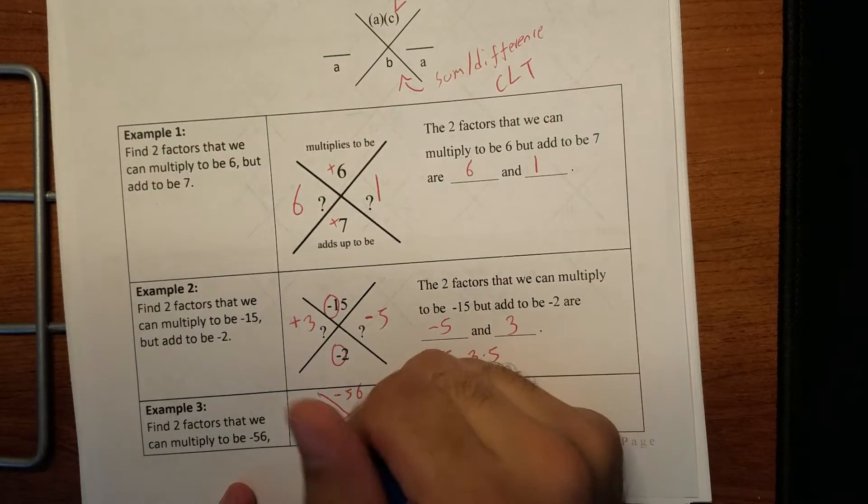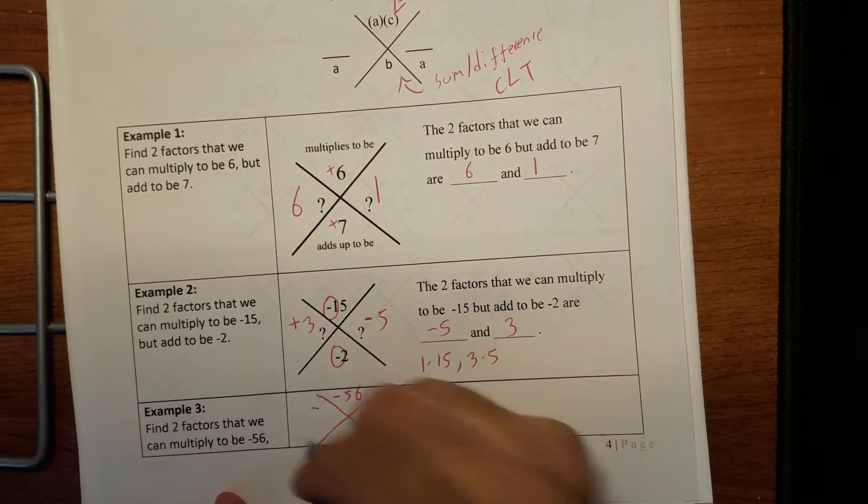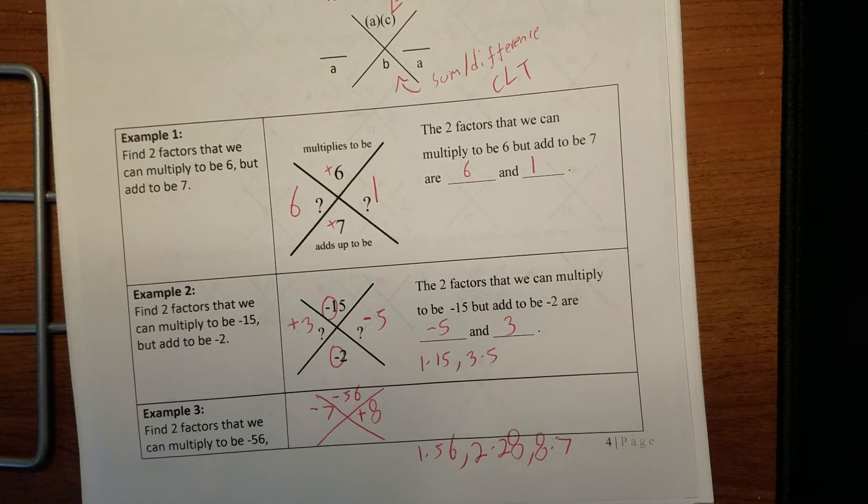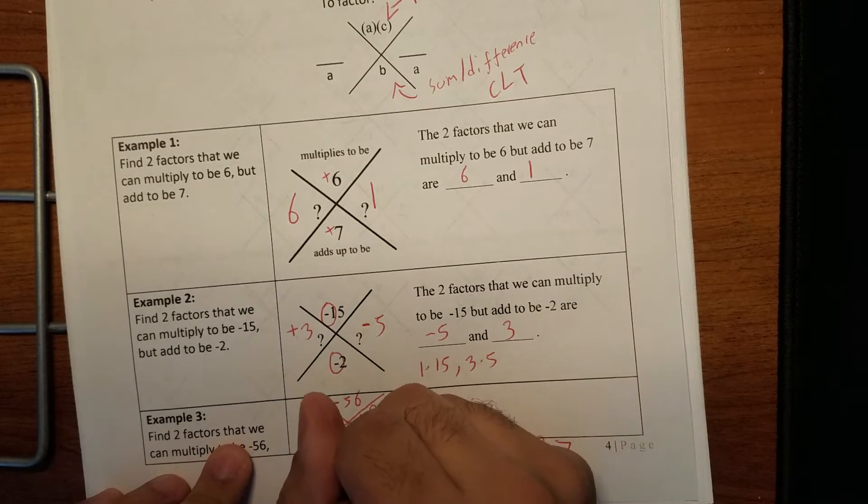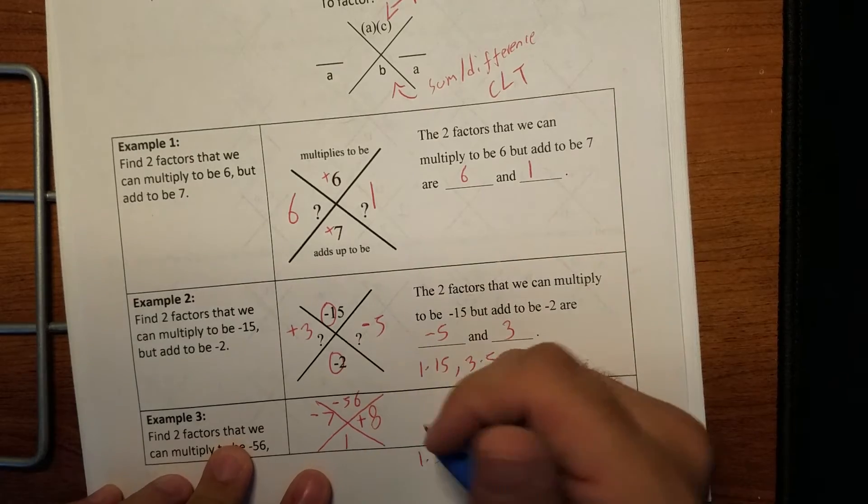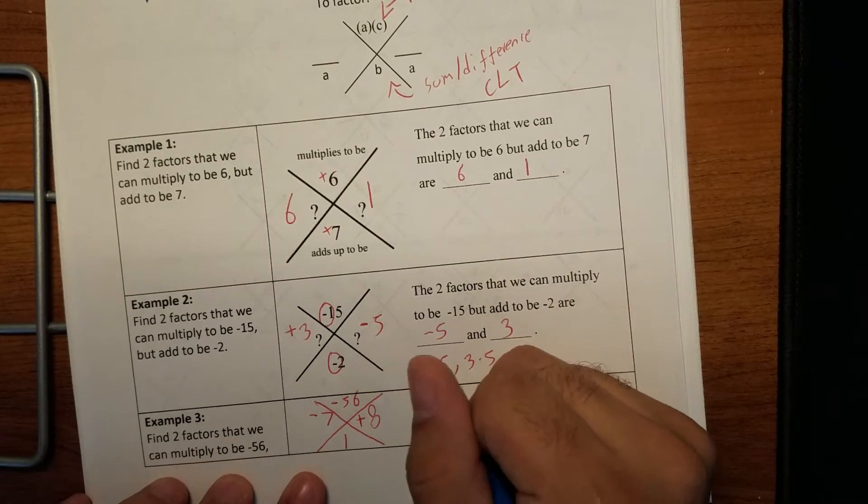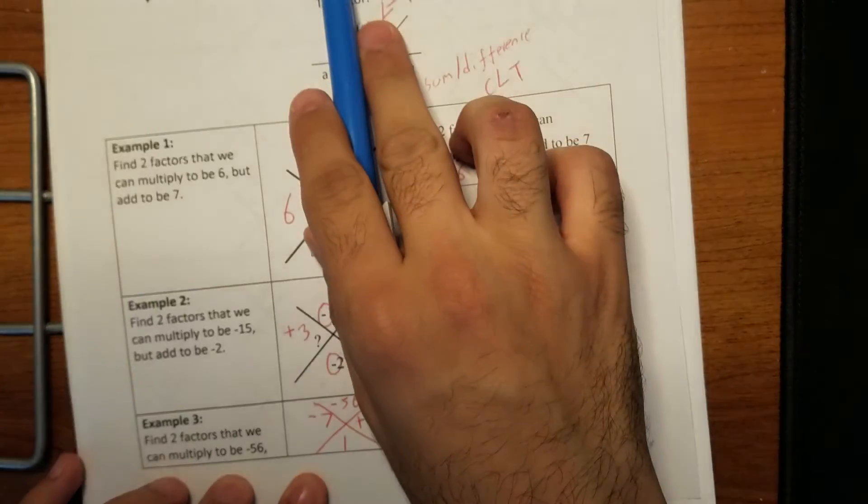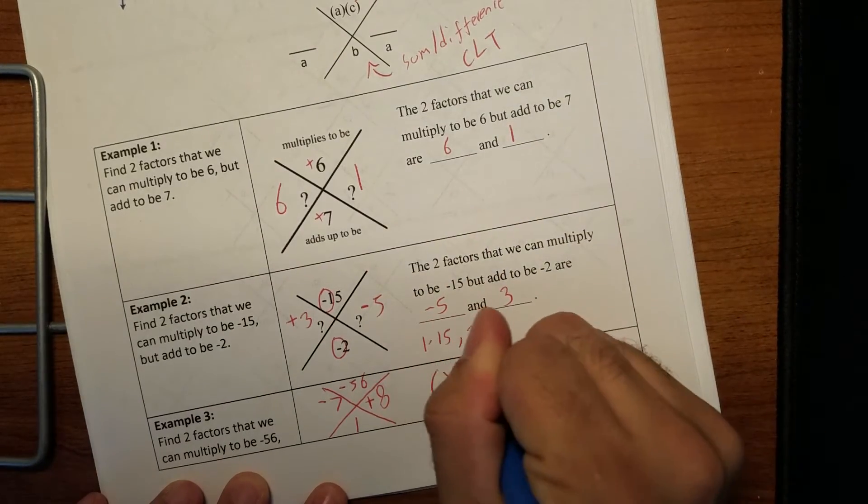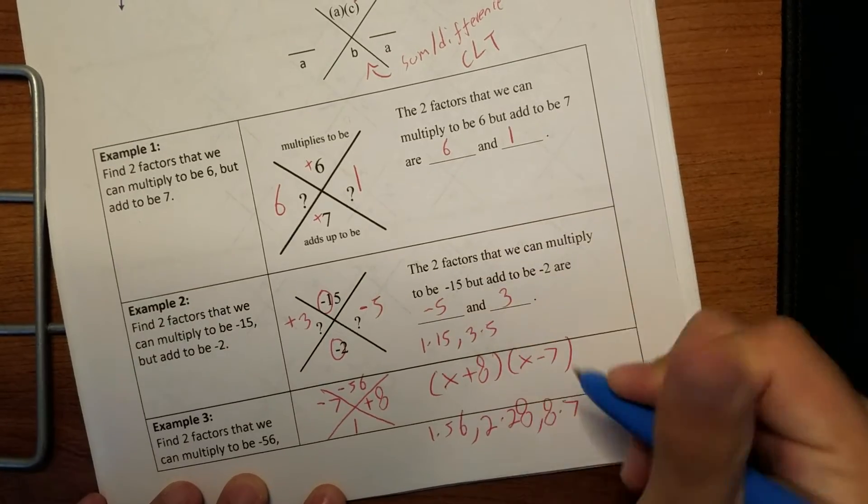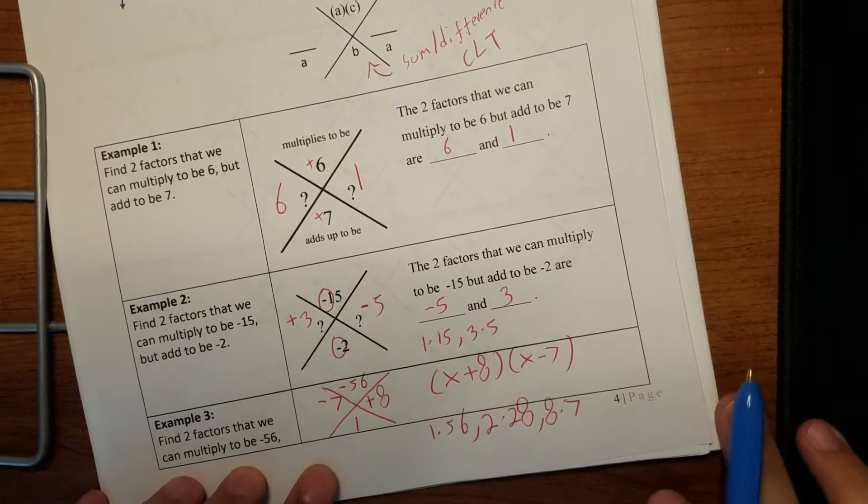We've got eight times seven. And we're gonna use eight and seven. If I make eight, the positive one, and seven, the negative one, well, I think it's multiplied to this, eight minus seven is positive one. So our two factors, and the way we actually wanna write them, if we have the variable X, we're gonna write this as X plus eight, and X minus seven, where our two factors are eight and negative seven.